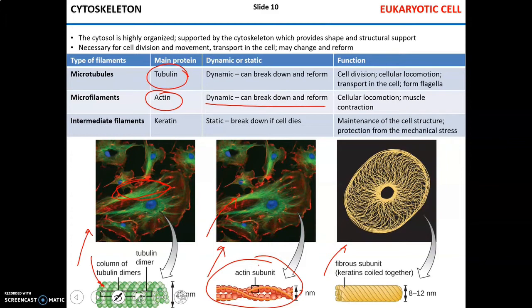Unlike microtubules and microfilaments, intermediate filaments are static — they break down only when the cell dies. They are like the beams and studs of a house; if these are gone, the house is gone. They are responsible for maintaining cell structure and protecting the cell from mechanical stress. Intermediate filaments are usually made of the protein keratin.